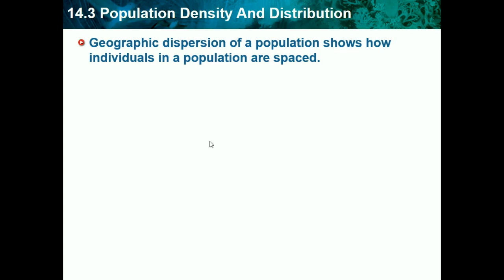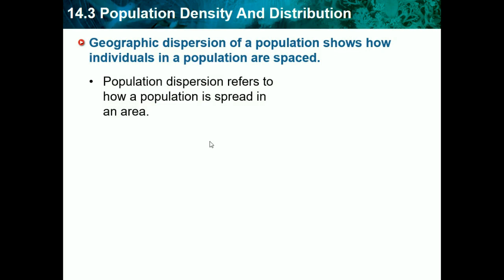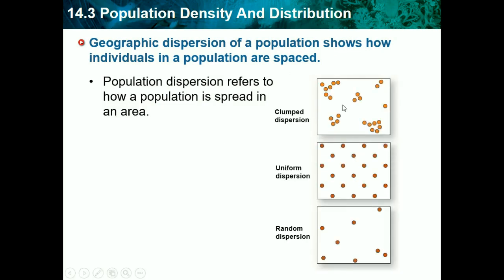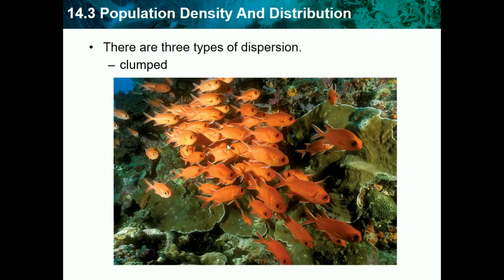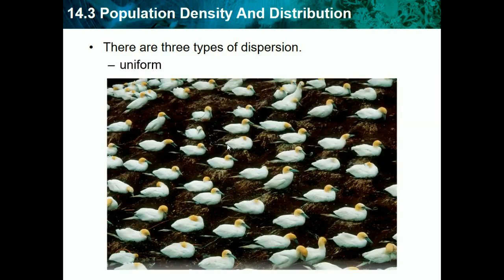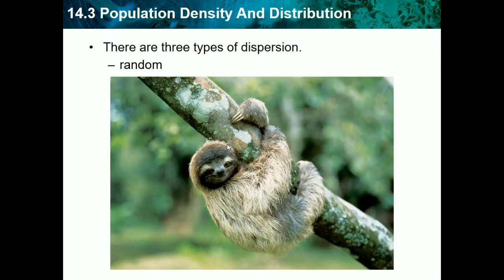Geographic dispersion of a population shows how much individuals in a population are spaced out. There are three types: clump dispersion, where populations are grouped into little clusters — like fish swimming in schools; uniform dispersion, where individuals are evenly spaced in straight lines — like birds' nests; and random dispersion, where individuals are scattered randomly — like sloths, which don't really come into contact with each other.